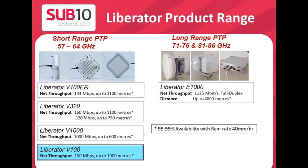We also have our long range P2P range, which consists of the Liberator E1000. That's in the 80 GHz band, giving just over a gigabit per second full duplex.